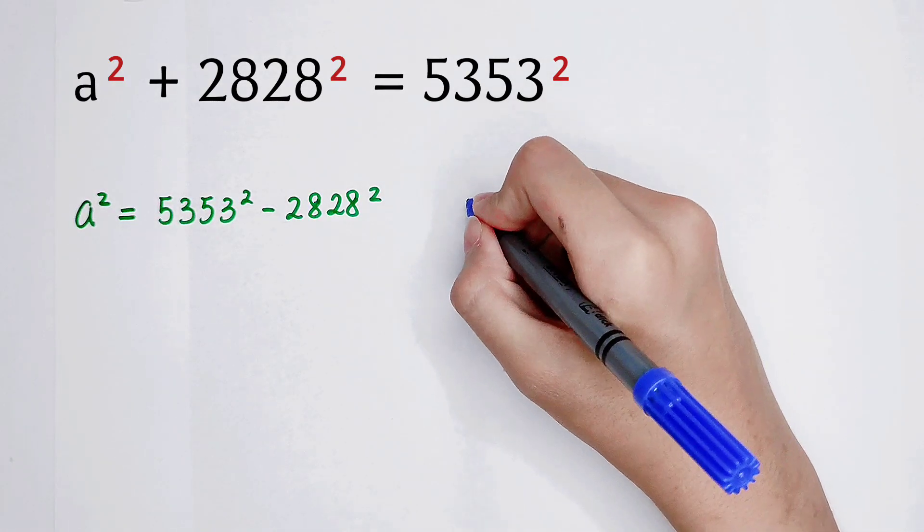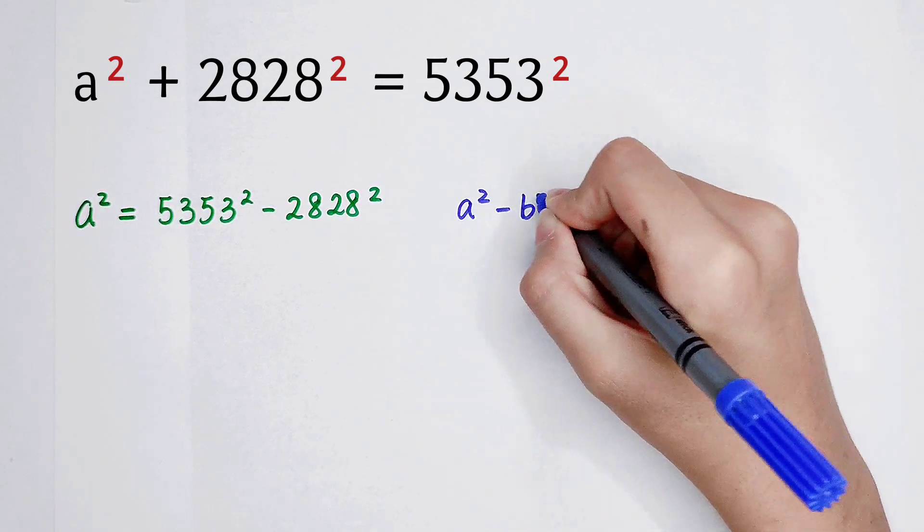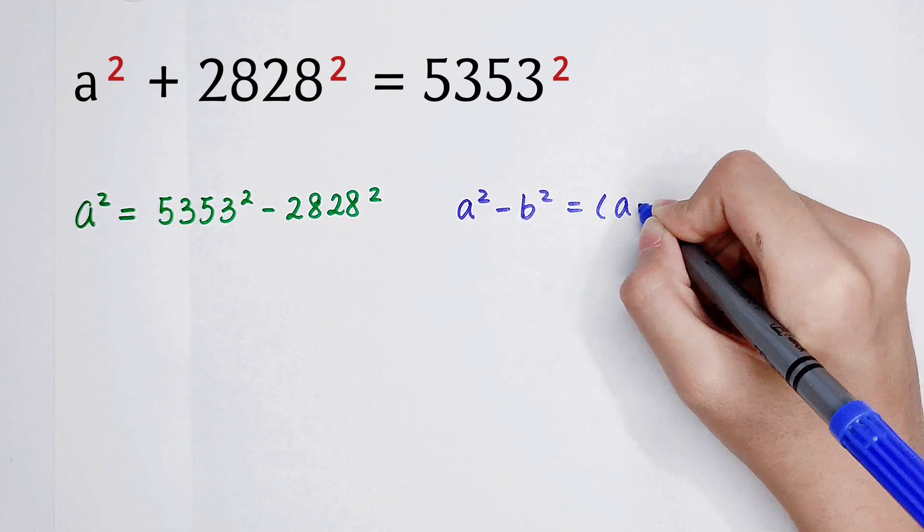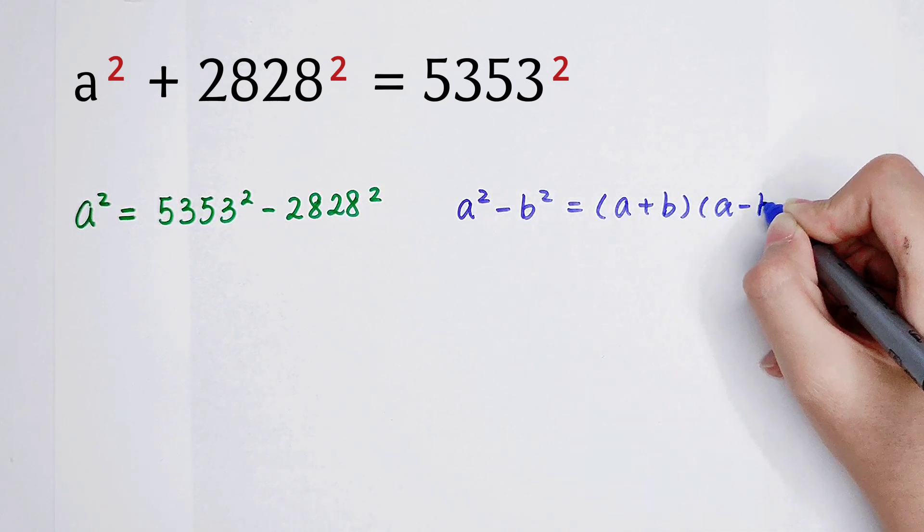It is 5353² minus 2828². Now, we use this formula: a² - b² = (a + b)(a - b).